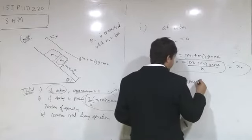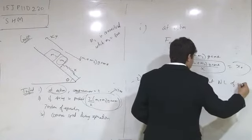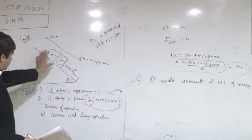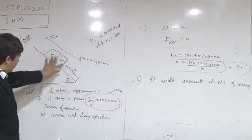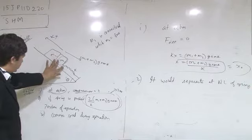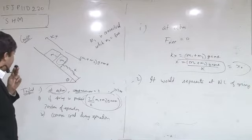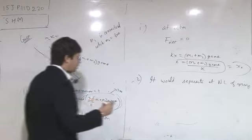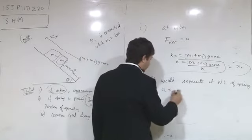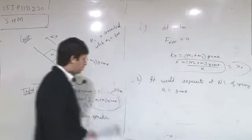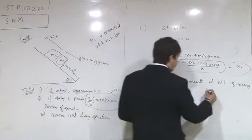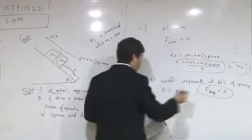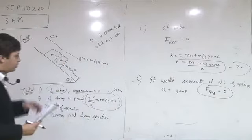The blocks separate at the natural length of the spring because at natural length, f_net is equal to zero at the mean position. After the block comes to natural length, the f_spring becomes equal to zero, and therefore the acceleration of the block becomes equal to g sinθ.